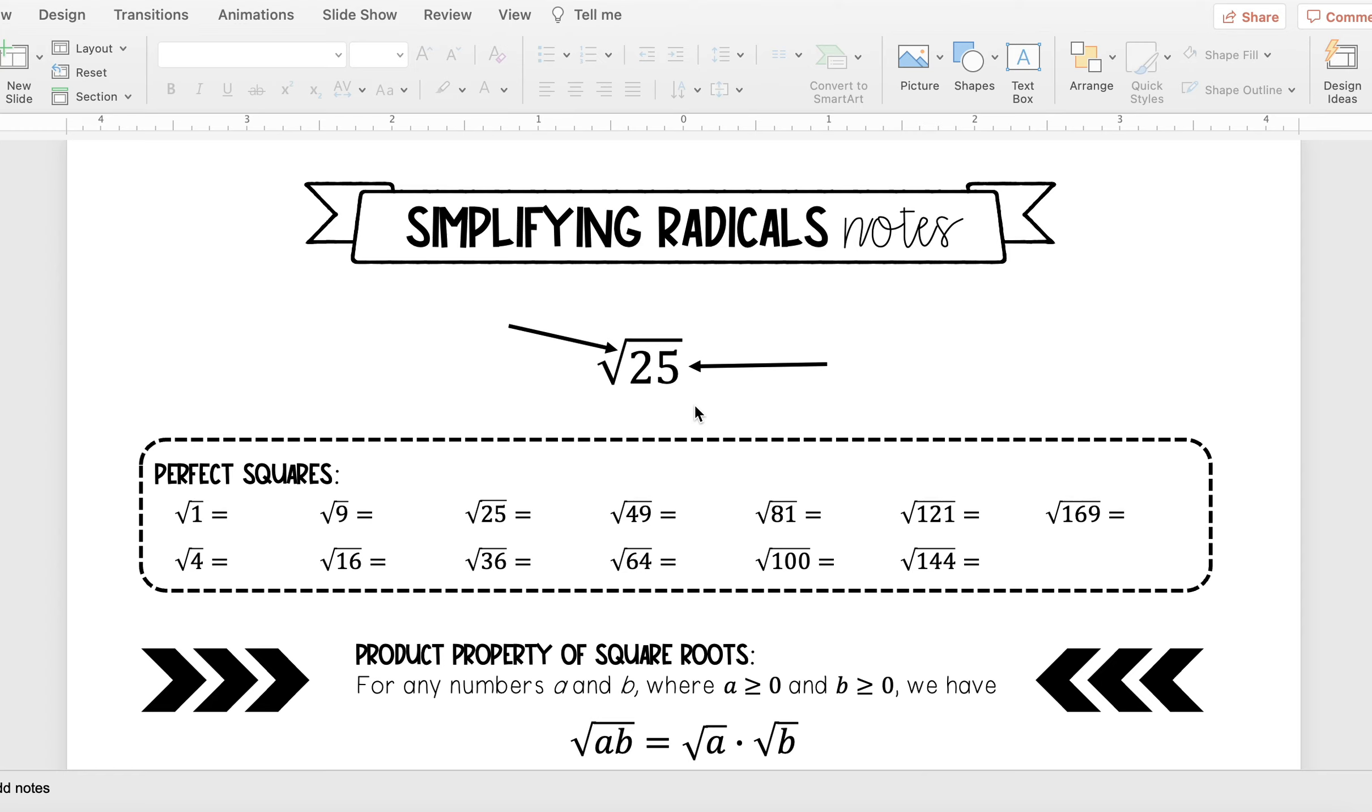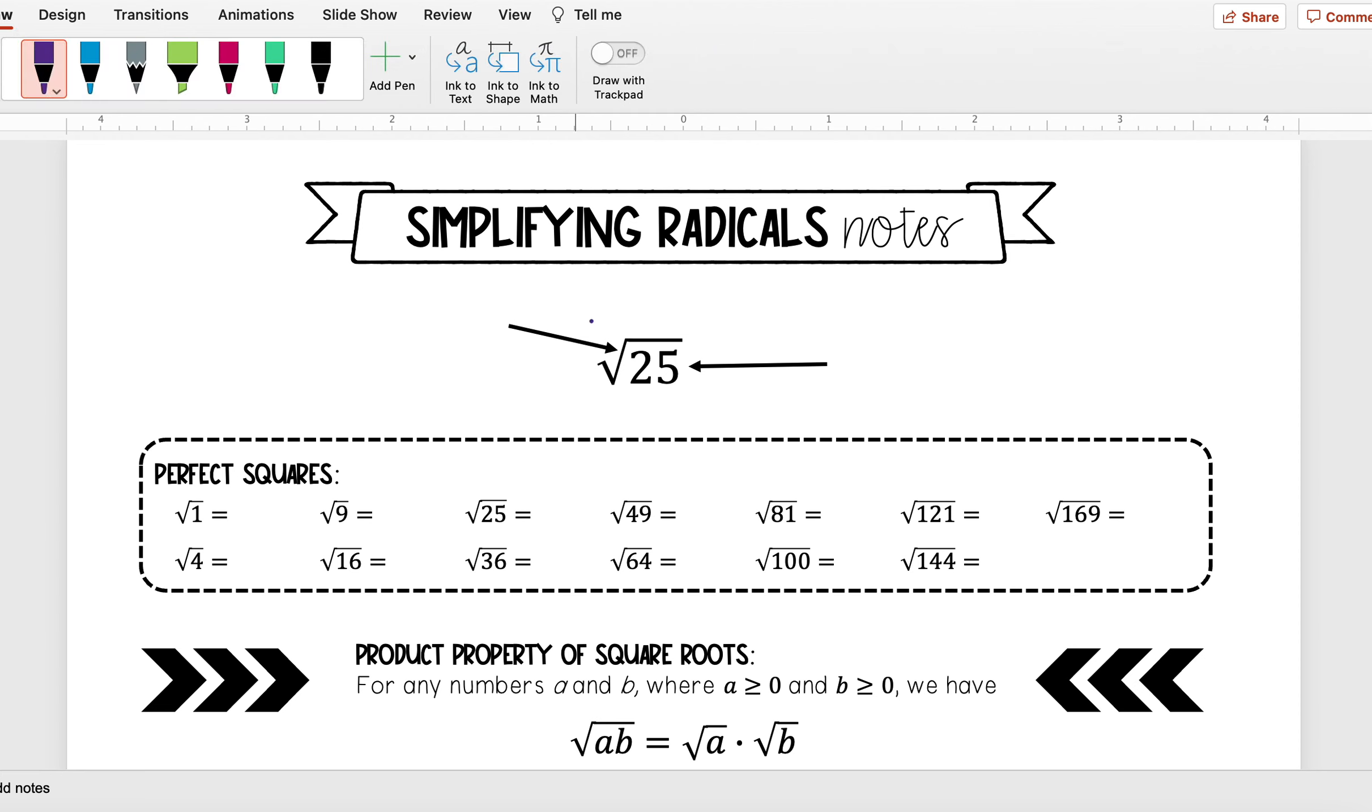Hello everyone, today we're getting into a new lesson on simplifying radicals. First, let's go over some vocabulary. We see we have the square root of 25 - this checkmark symbol is called the radical, and the 25 is called the radicand. That's what we're taking the square root of.